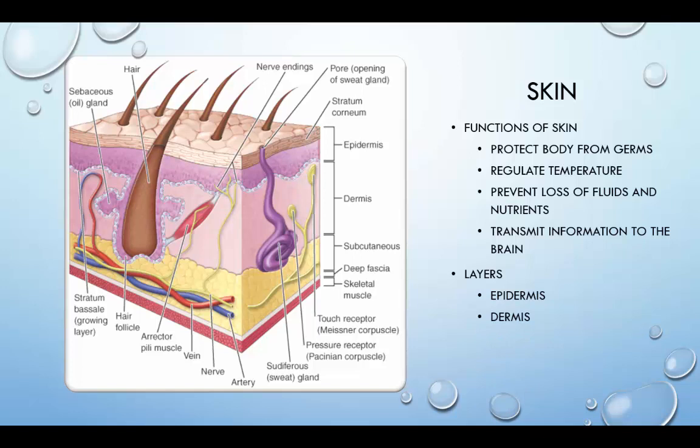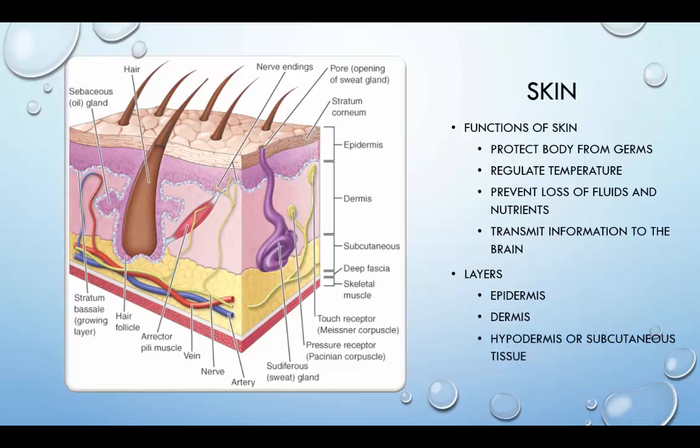The dermis contains the sweat glands, hair follicles, sebaceous glands, blood vessels, and a complex array of nerve endings. The subcutaneous tissue is composed of fat for insulation and energy storage.